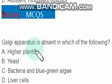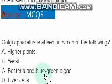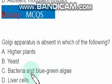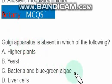Golgi apparatus is absent in which of the following? It is present in higher plants and yeast. It is absent in bacteria and blue-green algae, which are prokaryotes. Golgi apparatus is a membrane-bound organelle, and all membrane-bound organelles are absent in prokaryotes. So option C is the right option.